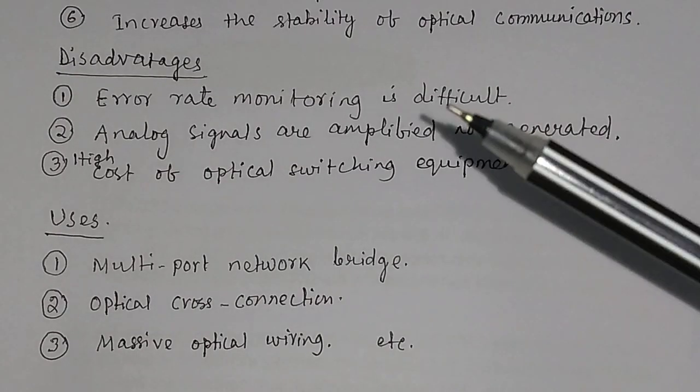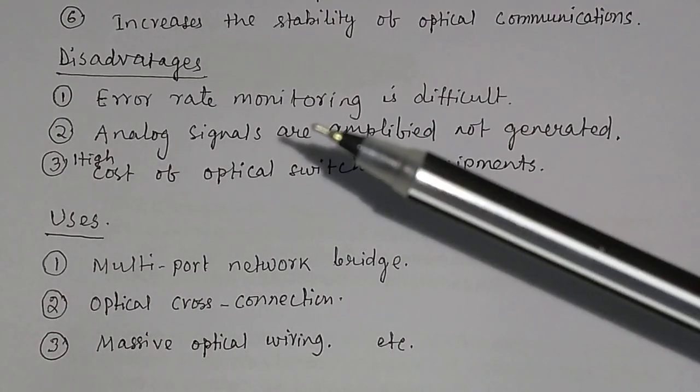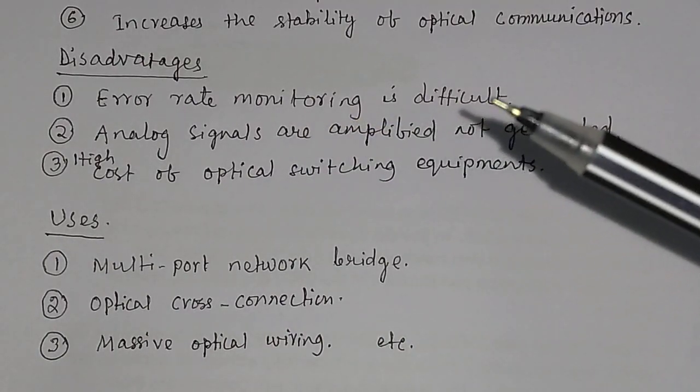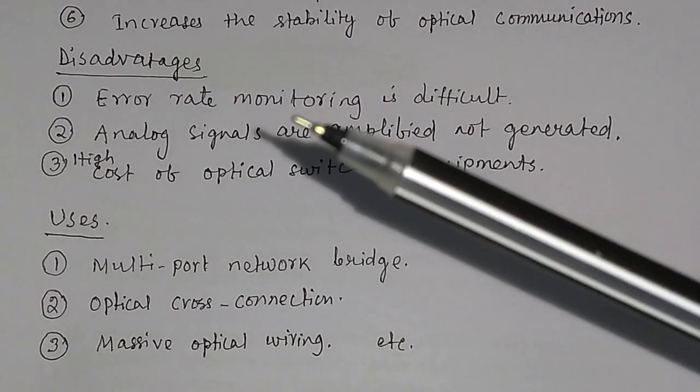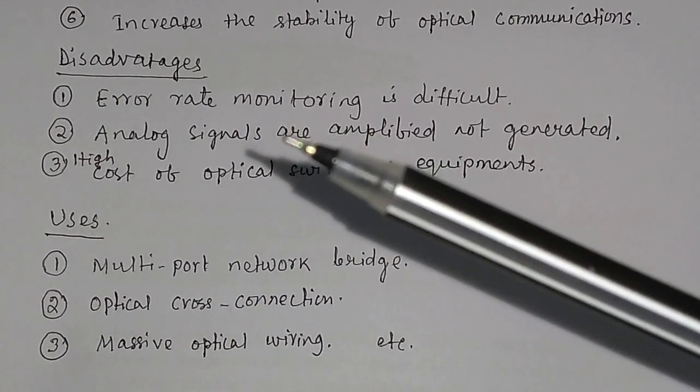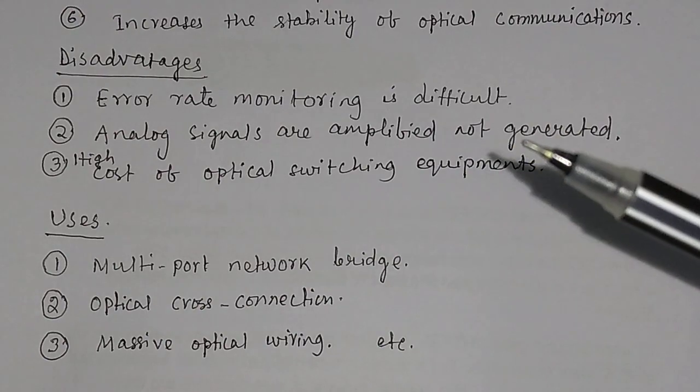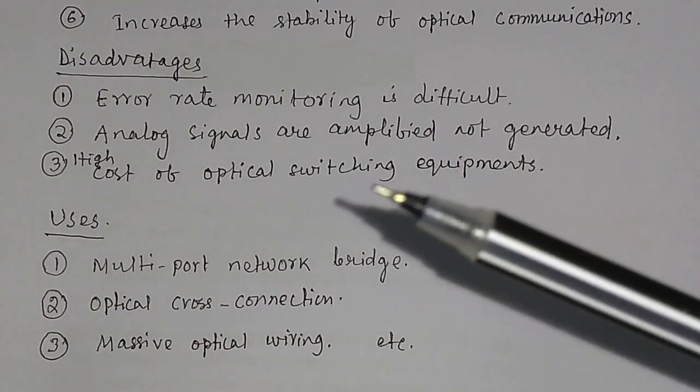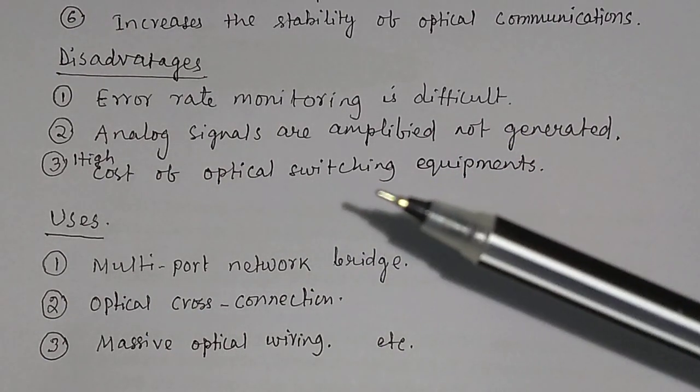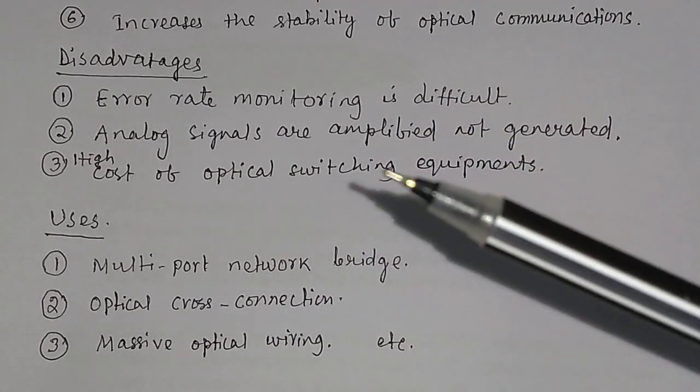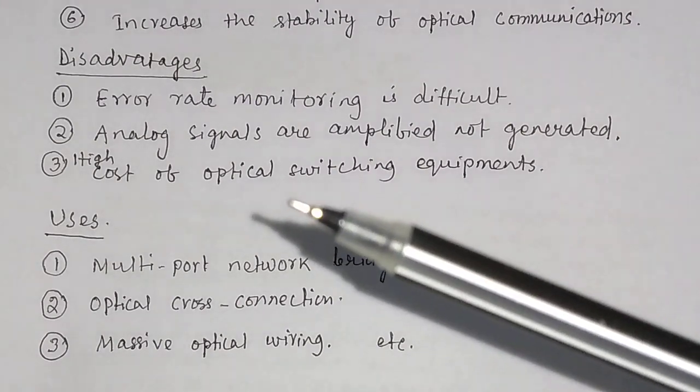There are also some disadvantages of optical switches. Number one is error rate monitoring is difficult. It is very difficult to find out the error rate in optical switches. Analog signals are amplified but not generated in optical switches. And the cost of optical switching equipments is very high.